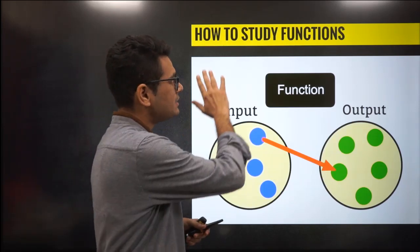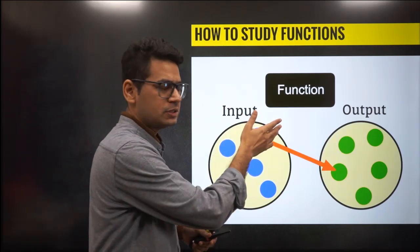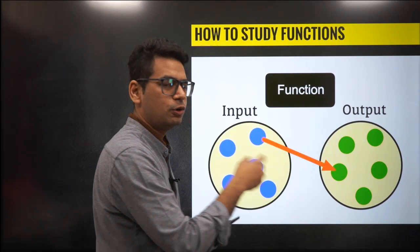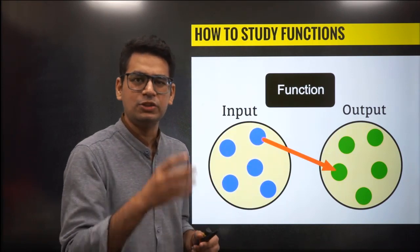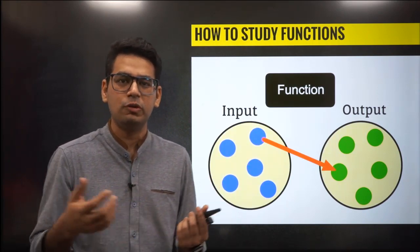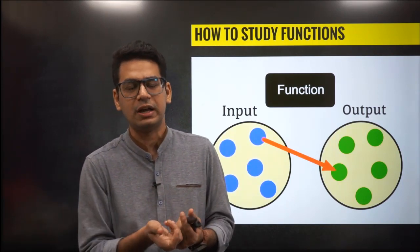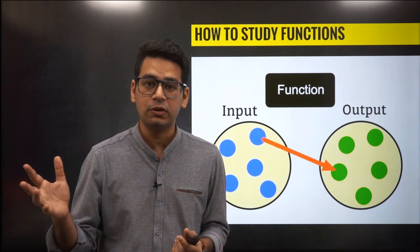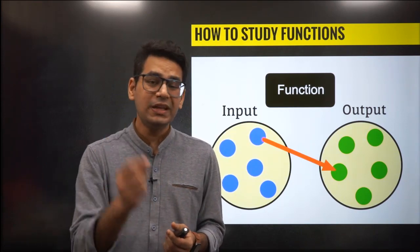तो कैसे पढ़ें functions? क्या है input, output, domain, range, composite function — पता नहीं क्या mapping चल रही है, कभी कुछ transformation लगा देते हैं। Lots and lots of things are going on.